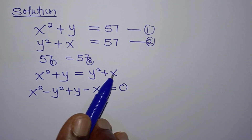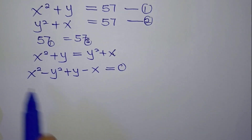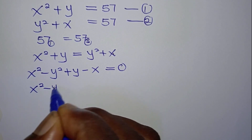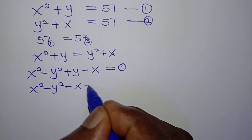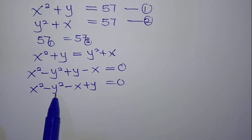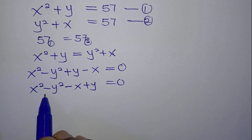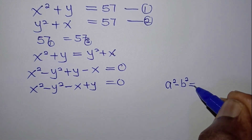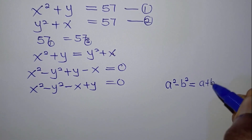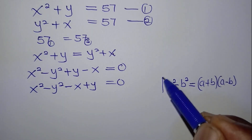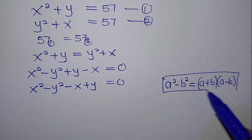We have succeeded in moving the right-hand side to the left-hand side. So we can write this as x squared minus y squared plus x plus y equals zero — that's another form. Now, x squared minus y squared is a difference of two squares, and the difference of two squares rule states: a squared minus b squared equals (a + b)(a − b). We are going to apply this rule to x squared minus y squared.